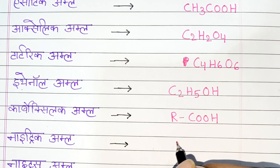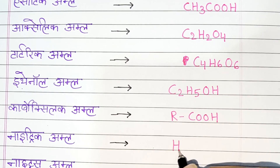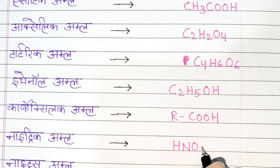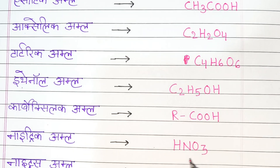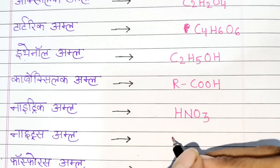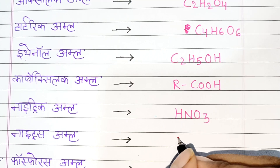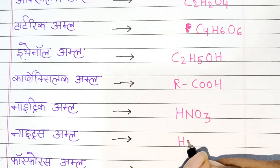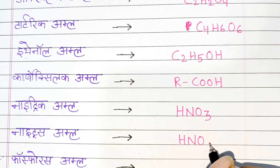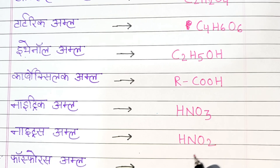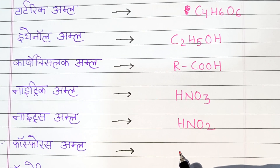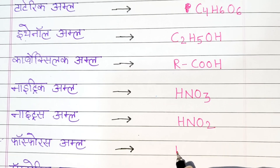6. Nitric Acid: HNO3. Nitrous Acid: HNO2. 7. Phosphorous Acid: H3PO3.